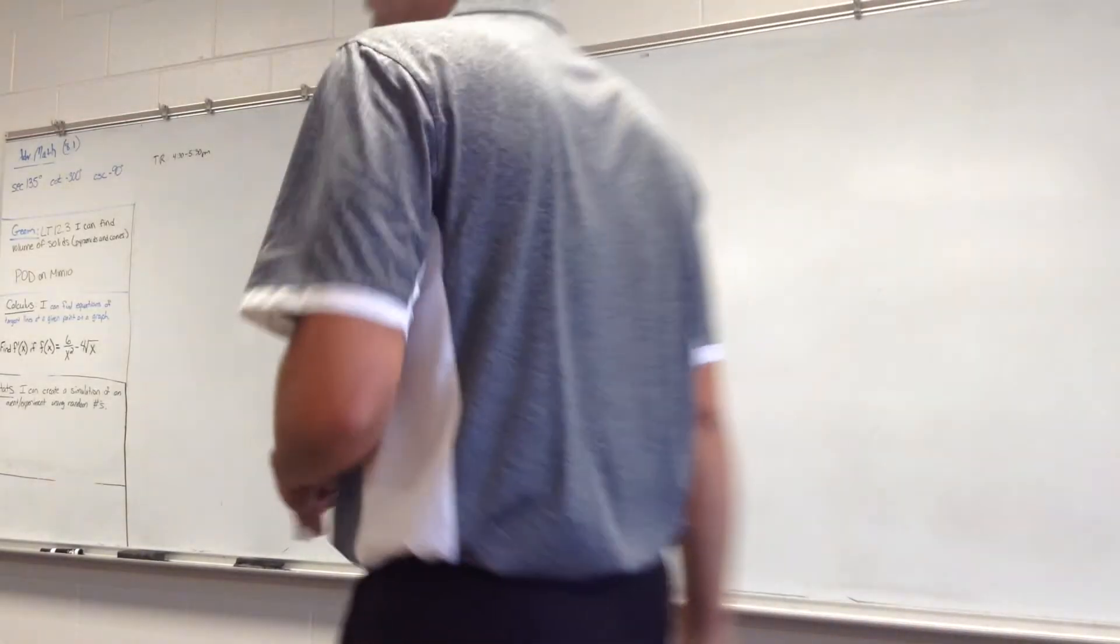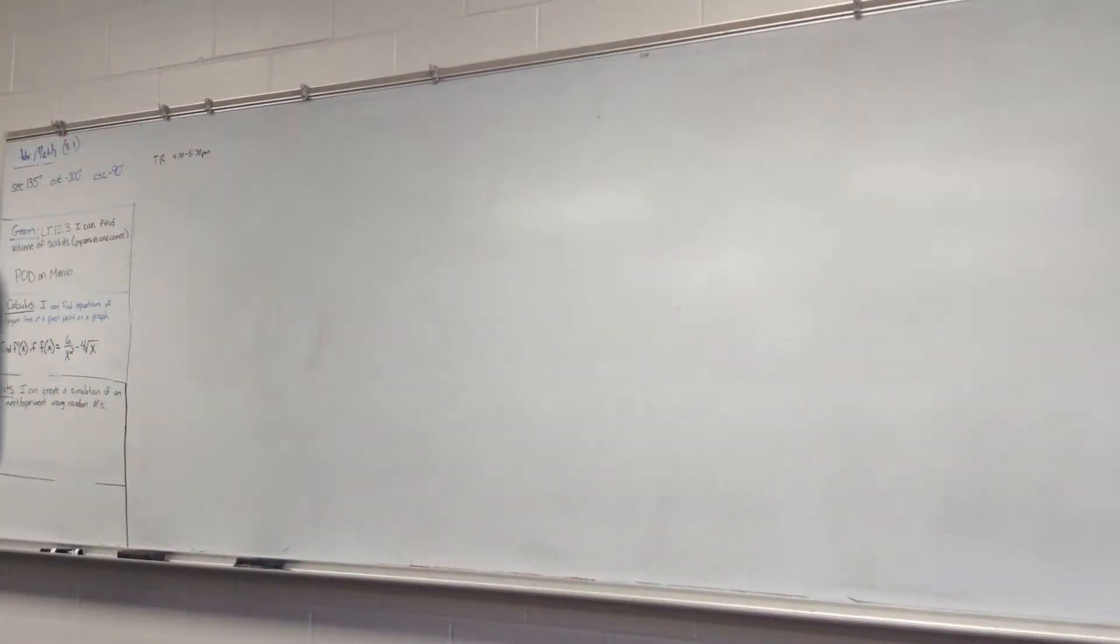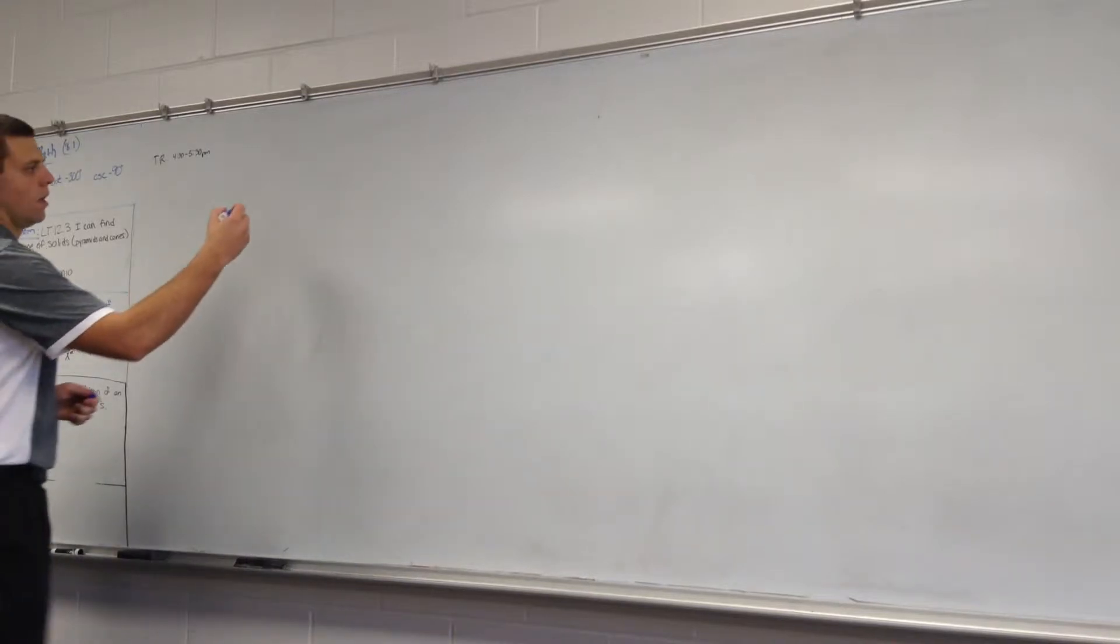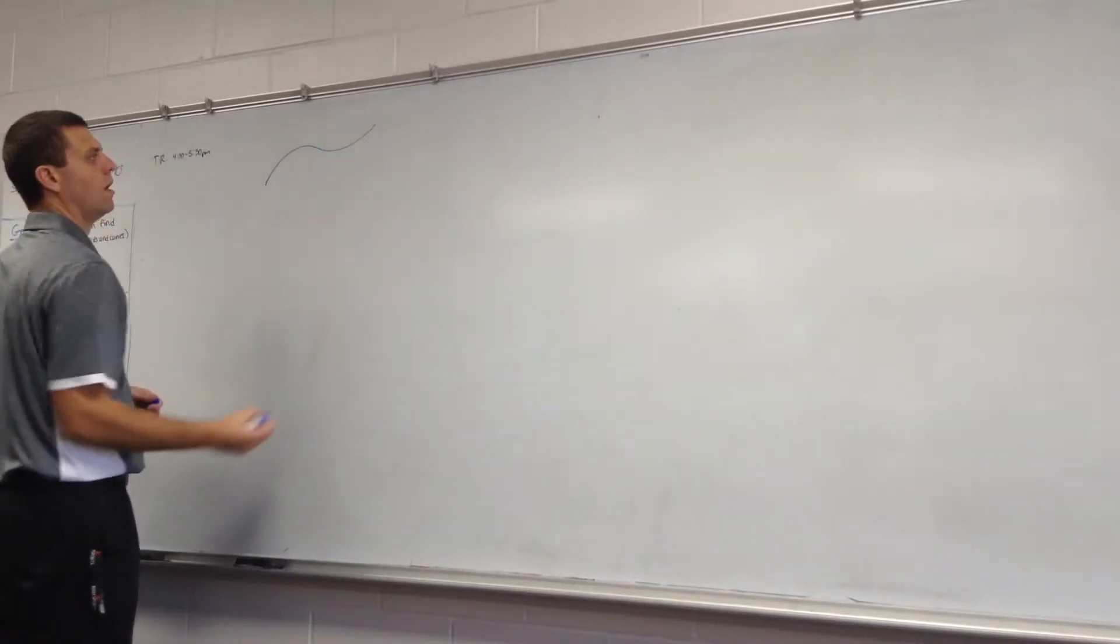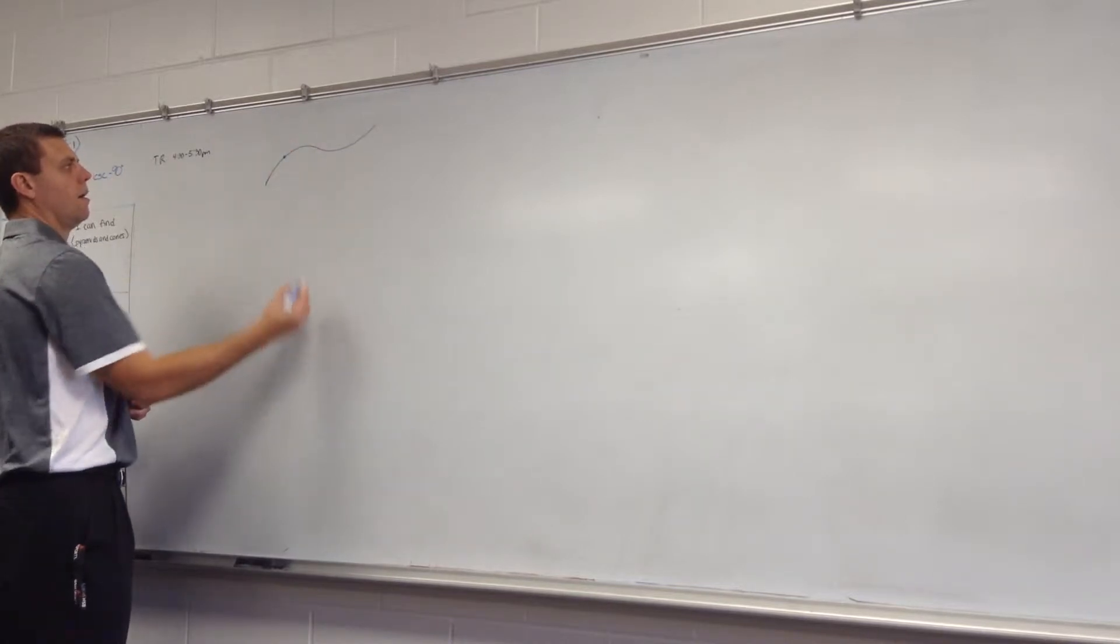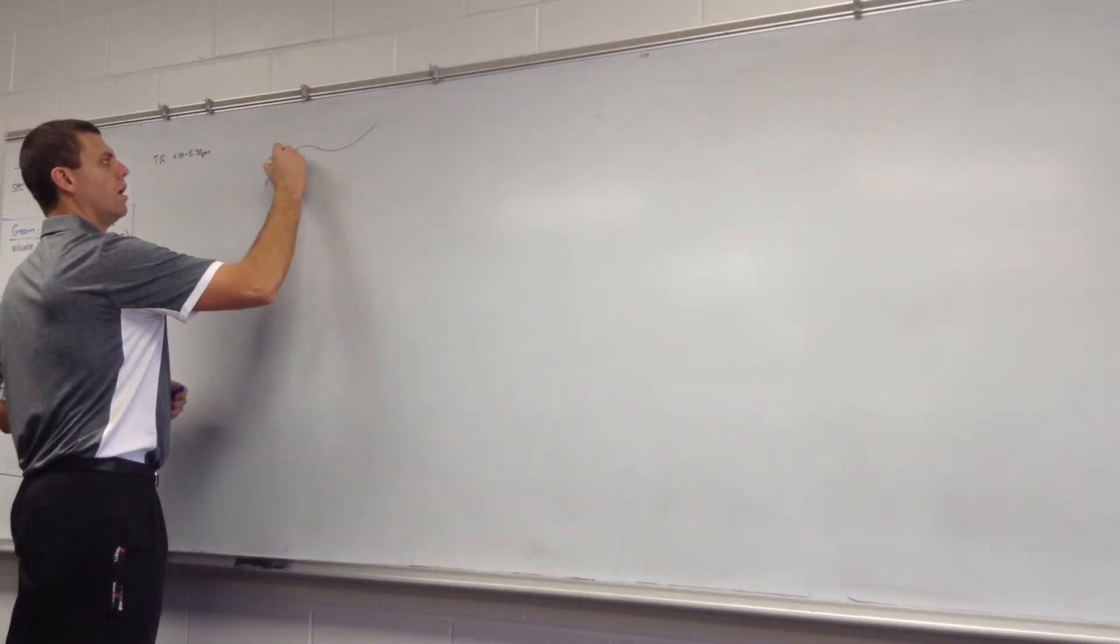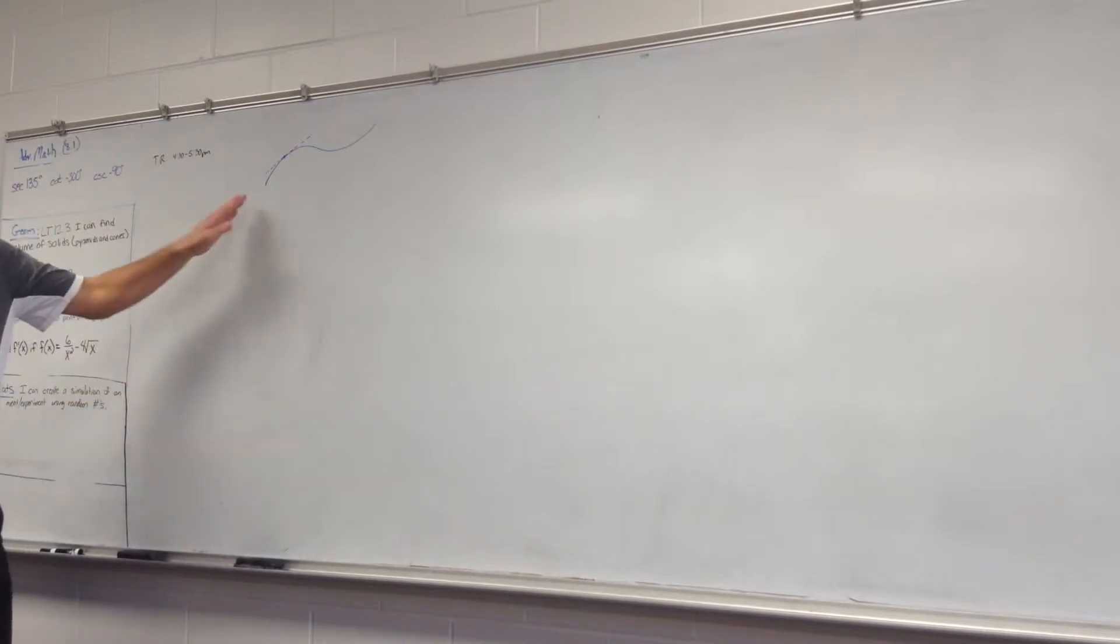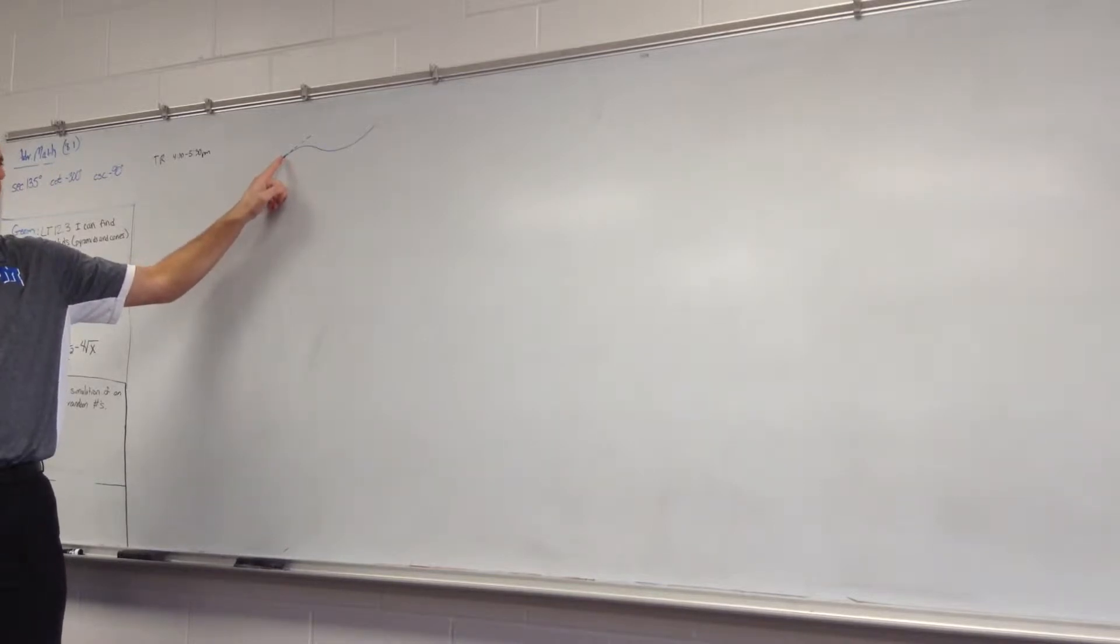Okay, so finding equations of tangent lines. If I have some function and I want to know the slope of the function at that point, right there, what do you do? Find the derivative. Get the derivative, plug it in. Plug in the point, the x value at that point.